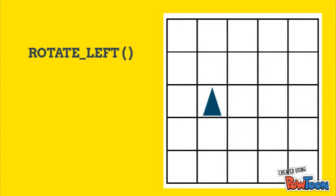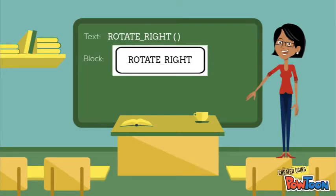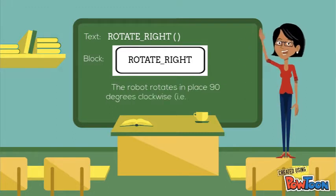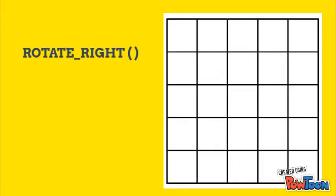Rotate right rotates the robot in place 90 degrees clockwise. In other words, it makes an in-place right turn. Here's an example of rotate right.